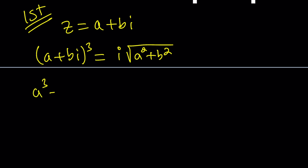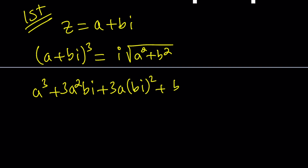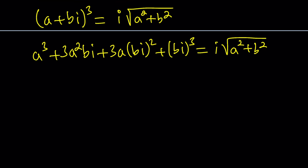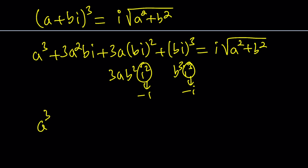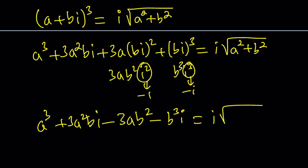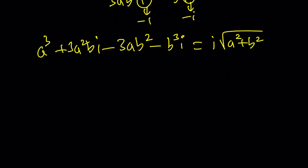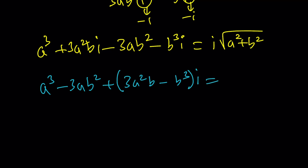Let's go ahead and expand it, then put the real and imaginary parts together. We have 3i b squared i squared and b cubed i cubed. As you know, i squared is negative one and i cubed is negative i. So we get a cubed plus 3a squared bi, and then negative 3ab squared minus b cubed i equals this.